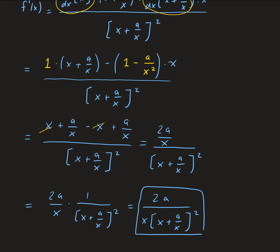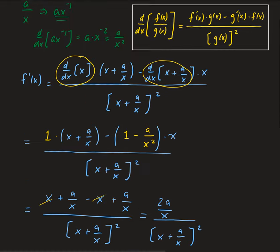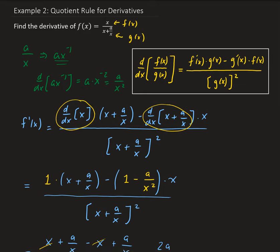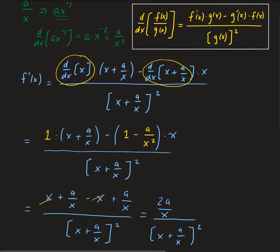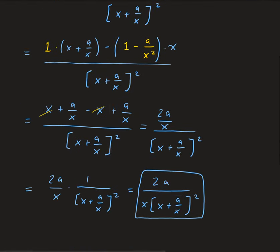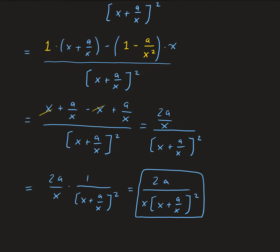We can stop here — that is the derivative of our given function. We applied the quotient rule by taking the derivative of the top multiplied by the bottom function, minus the derivative of the bottom function times the top function, all divided by the denominator squared. From there we simplified to get the final result.